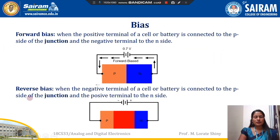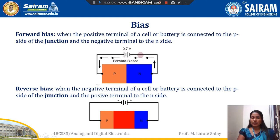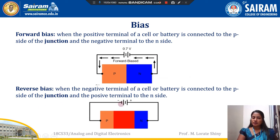Bias. There are two types of biasing in a diode: forward biasing and reverse biasing. Forward biasing: when the positive terminal of the supply voltage is connected with the P-region and the negative is connected with the N-region, it is called forward biasing. Reverse bias: when the negative of the power supply is connected with the P-region and the positive of the power supply is connected with the N-region, it is called reverse bias.